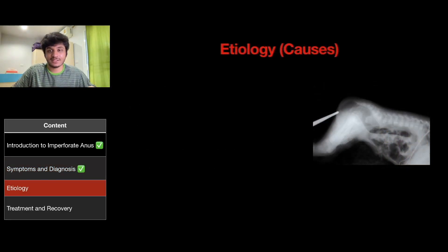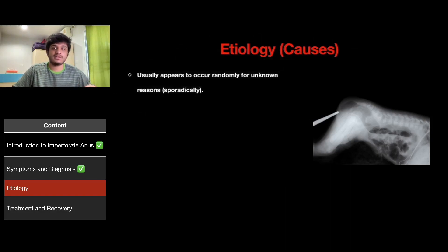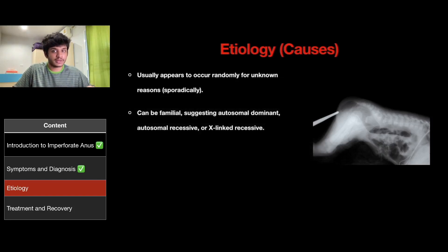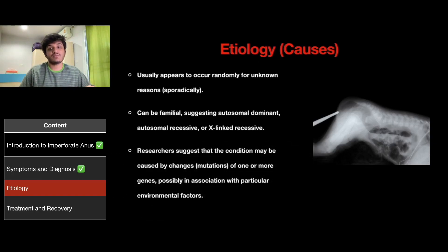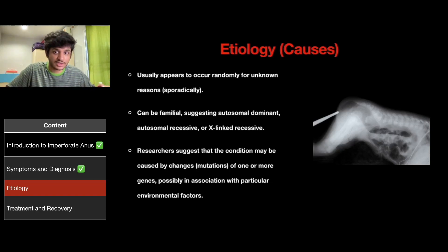What is the etiology of this disease? Etiology means causes. Imperforate anus is a birth defect that usually appears to occur randomly for unknown reasons. Less commonly, the condition can be familial, suggesting autosomal dominant, autosomal recessive, or X-linked recessive inheritance. In addition, some researchers suggested that the condition may be caused by changes of one or more genes, also known as mutation, possibly in association with particular environmental factors.